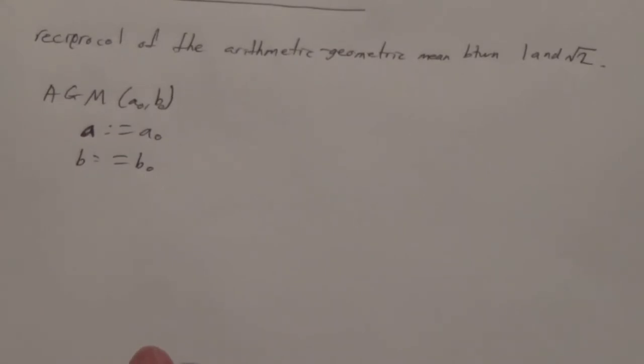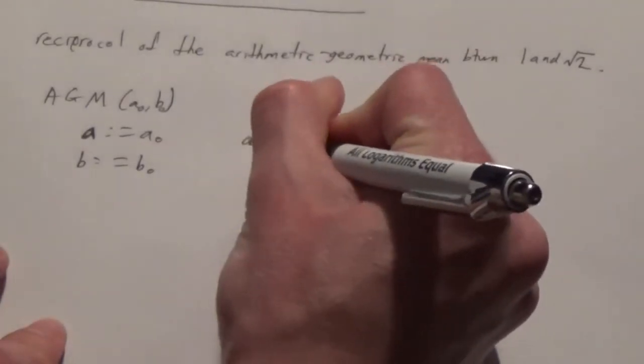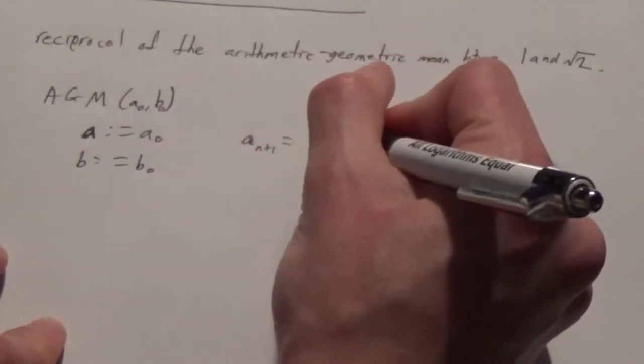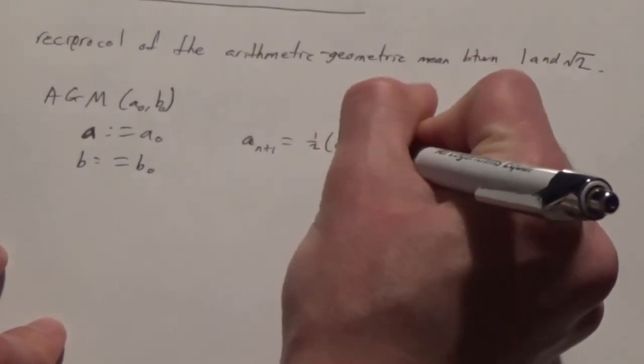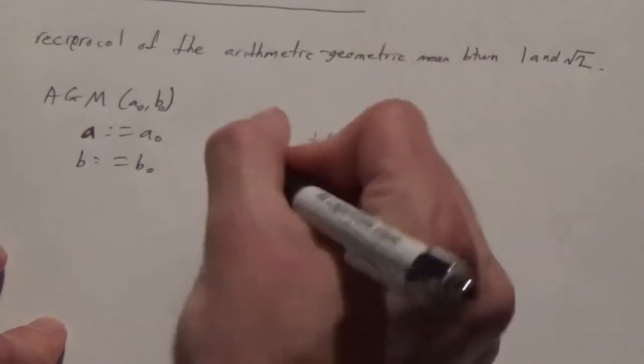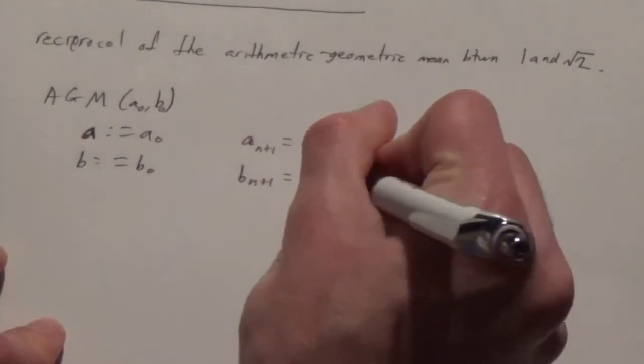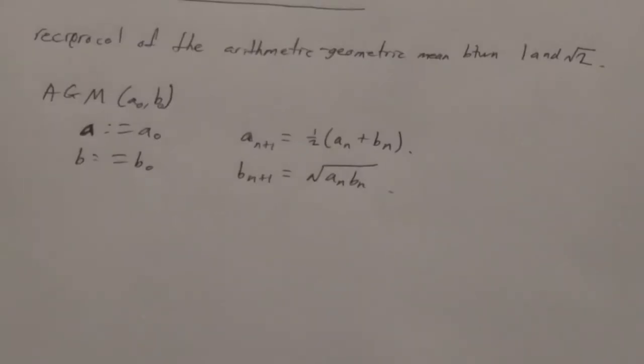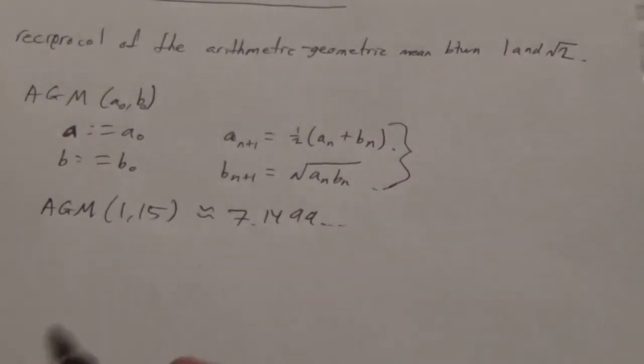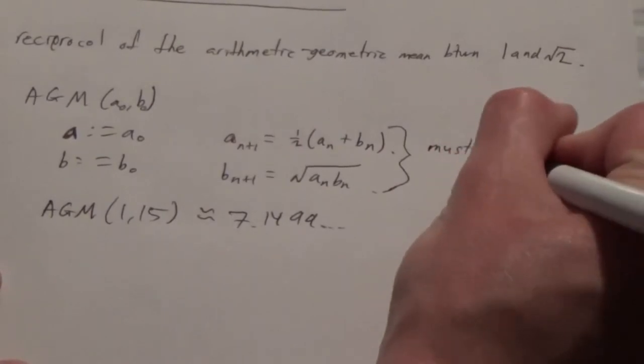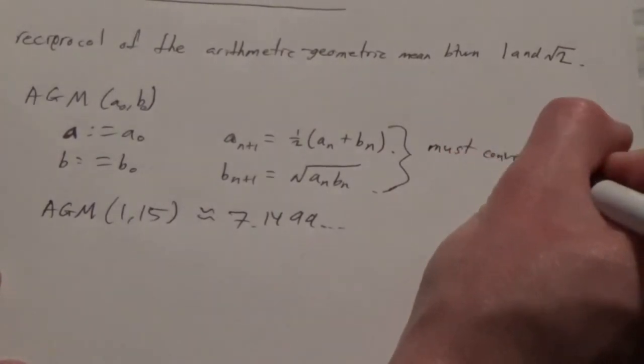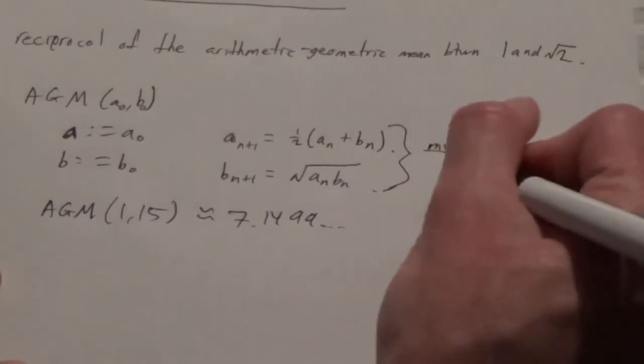To calculate the next step, A sub n plus 1 is equal to half the sum of A sub n and B sub n. And B sub n plus 1 is equal to the square root of A sub n, B sub n. Using these very simple rules, we can combine the two different ideas of arithmetic mean and geometric mean into one new kind of function. These two sequences actually must converge. After you keep iterating this process, these sequences must converge to a single value.